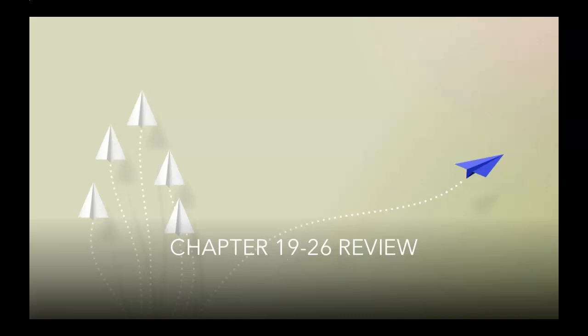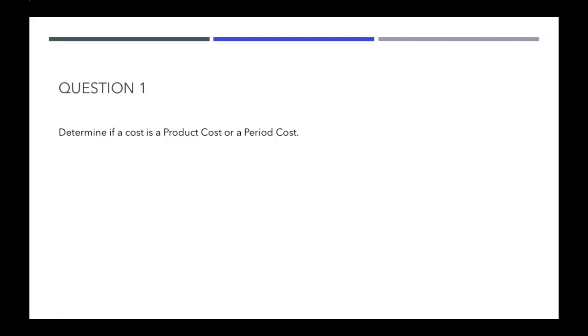Let's review chapters 19 to 26. The first question, way back at the start of your class, you had to figure out whether a cost was a product cost or a period cost. A product cost would be something like direct material, direct labor, and manufacturing overhead — things that go into the manufacturing of that product. A period cost includes costs that are outside of the factory, outside of the manufacturing process.